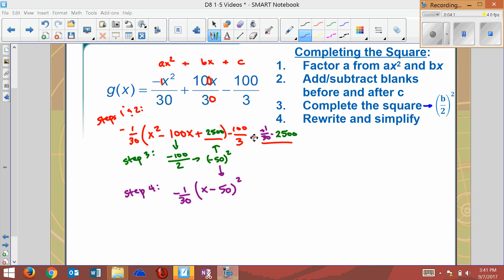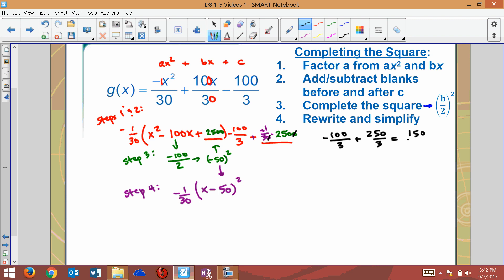Now I have this over here. I have negative 100 over three plus, it looks like 2500 over 30, so I can cancel that out and it would be over here. I'd have negative 100 over three plus 250 over three, which is equal to positive 150 over three, which also equals 50. So here on the outside of my equation I should have plus 50.